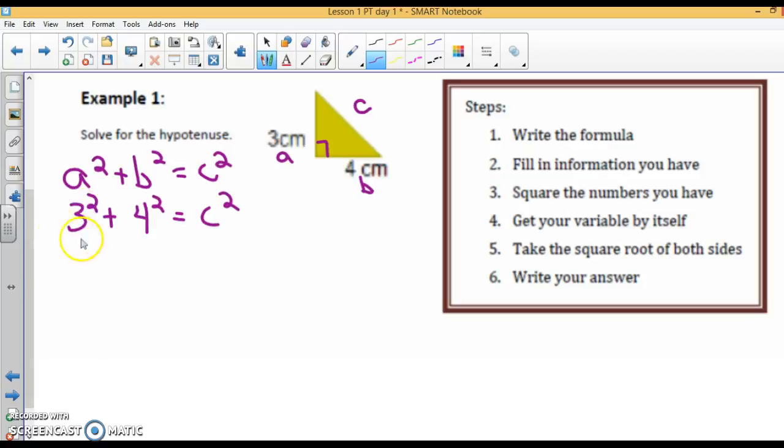Simplify it. You've got to do exponents before you add. So 9 plus 16 equals C squared. 9 plus 16 is 25 equals C squared. Now, we have not solved any equations like this. We do not want to solve for C squared. We want to solve for C. So remember, when you solve equations, you can do anything you want as long as you do it to both sides. So we're going to take the square root. The square root of C squared is C. The square root of 25 is 5. So the hypotenuse is 5 centimeters.